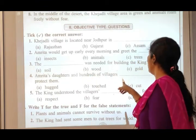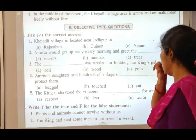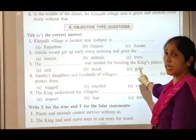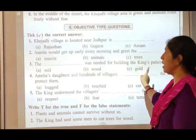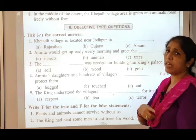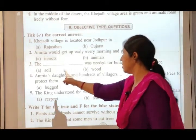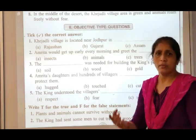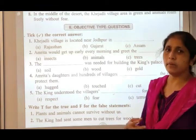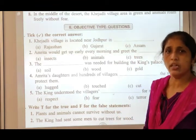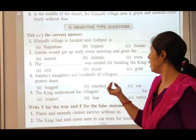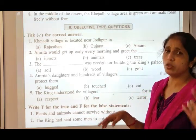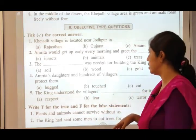Third question: The dash was needed for building the king's palace. For the king's palace, what was needed? The answer is wood. In older times everything was made of wood, so the king wanted wood. They were cutting the Khejali trees to get wood.